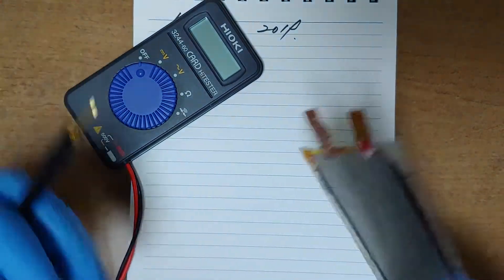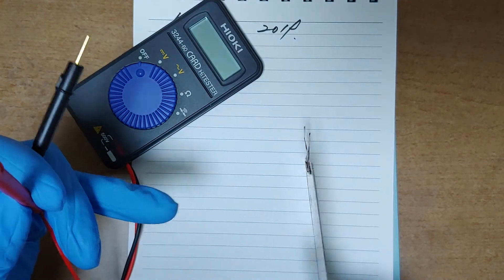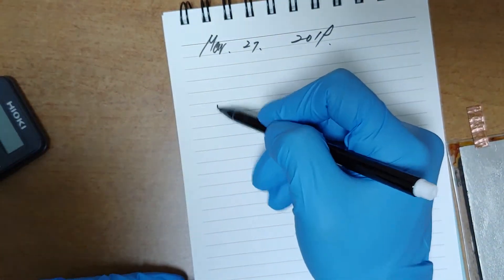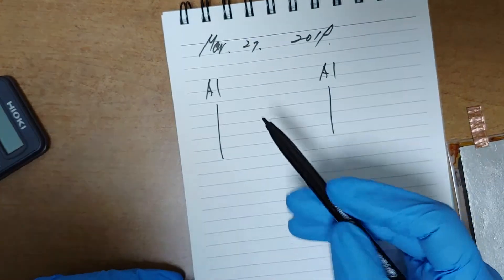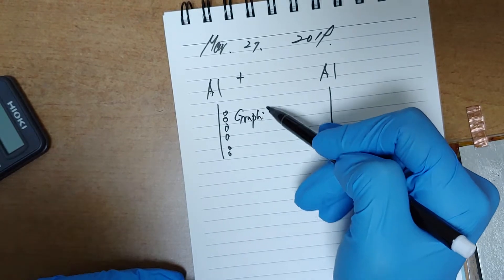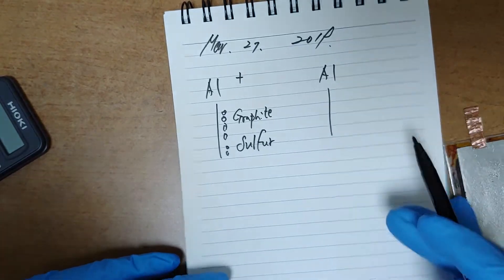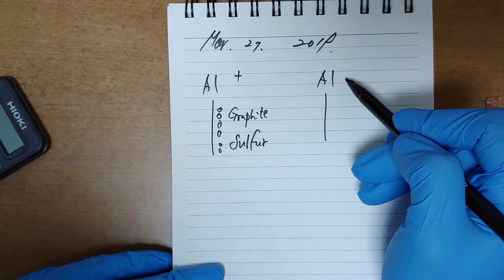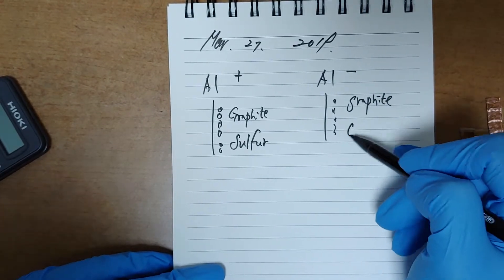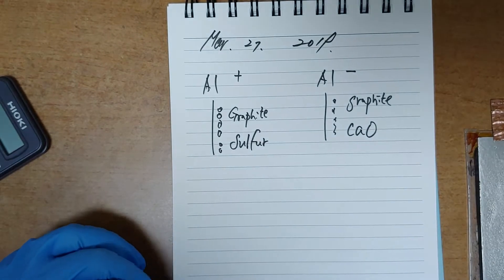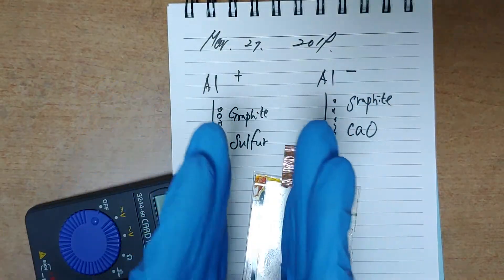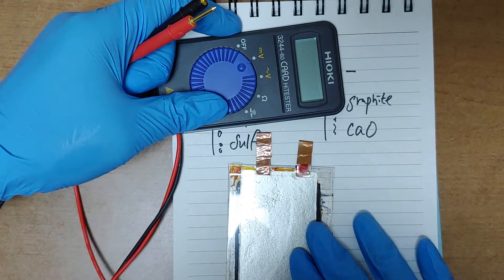In my opinion, both electrodes are aluminum. The principle is: one aluminum electrode — to make this electrode positive, I mixed graphite and sulfur. To make the other electrode negative, I mixed graphite and sulfur and calcium oxide. I made the two plates differently.